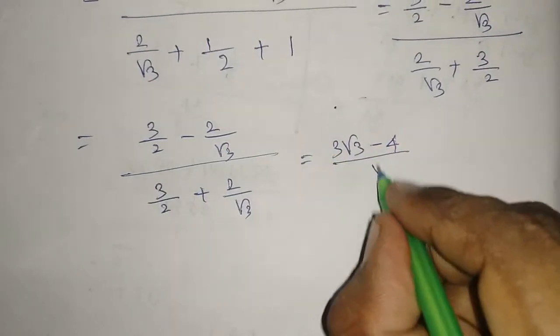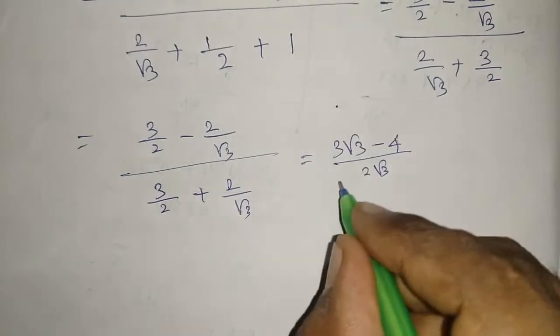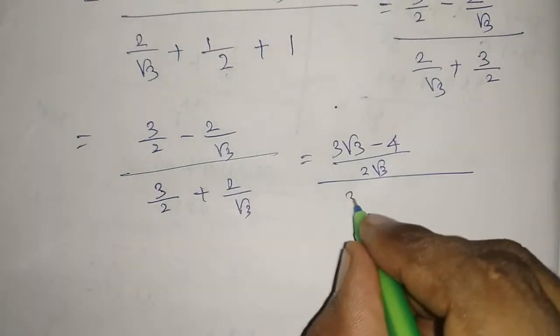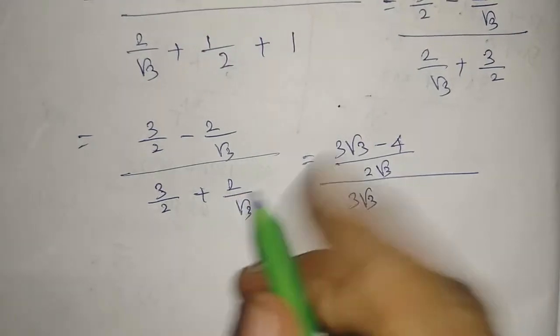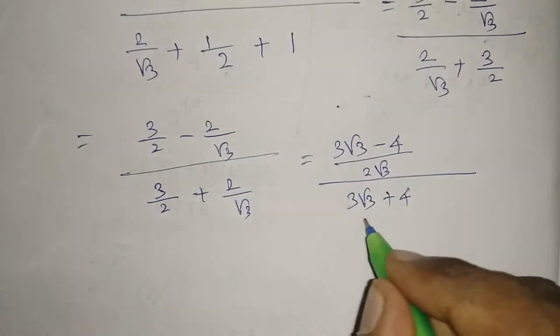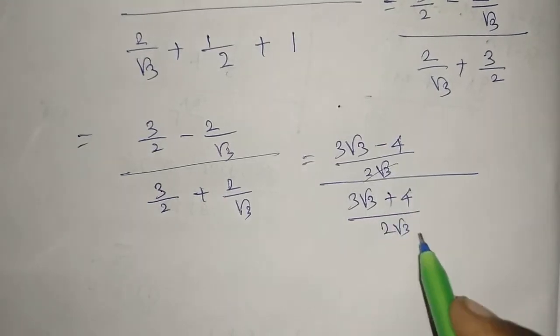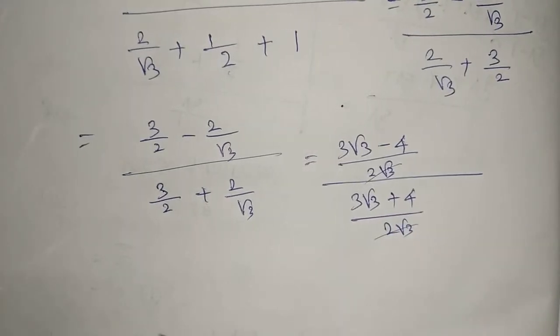Then what I am getting: 3 into √3 gives 3√3 minus 4, divided by 2√3. In the same manner here also, 3√3 + 4 divided by 2√3. The 2√3 will cancel.